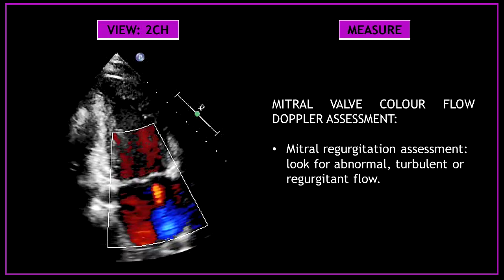Now use color Doppler to assess the flow across the mitral valve. As part of the mitral regurgitation assessment, look for abnormal, turbulent, or regurgitant flow with color Doppler.